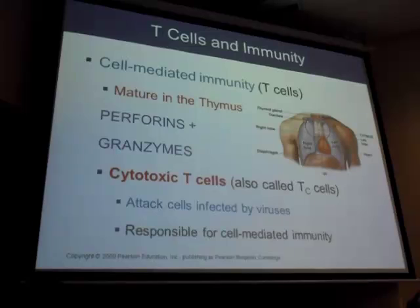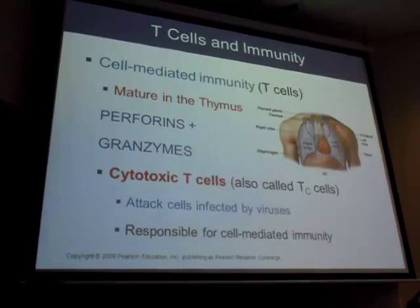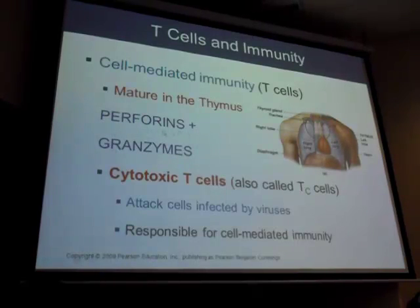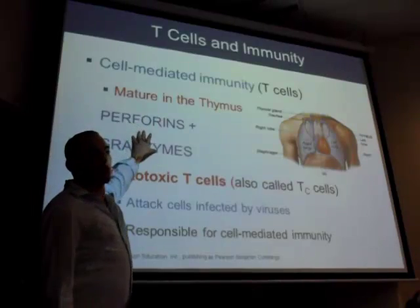Now we look at cytotoxic T cells. There are three T cell types: cytotoxic, helper, and suppressor — that's where the flowchart helps. Cytotoxic T cells release toxins using two substances: perforins (which perforate — put holes in the target cell membrane) and granzymes (granule enzymes that go inside and kill the cell). That's the attack mechanism for cell-mediated immunity.